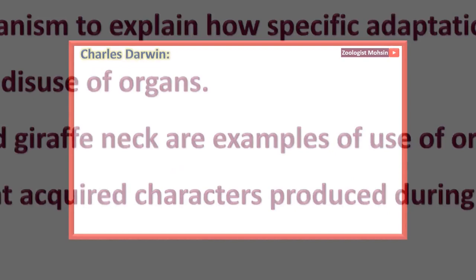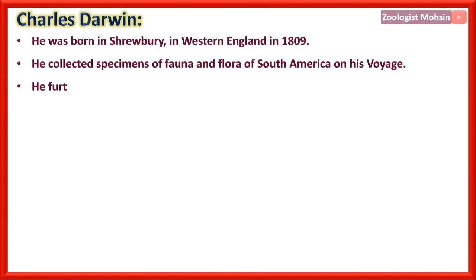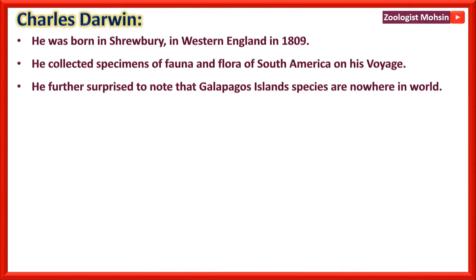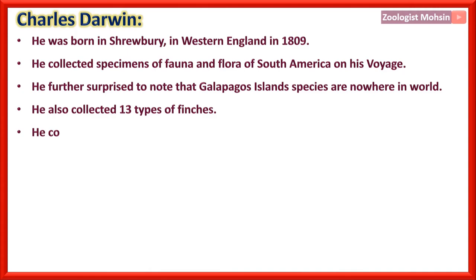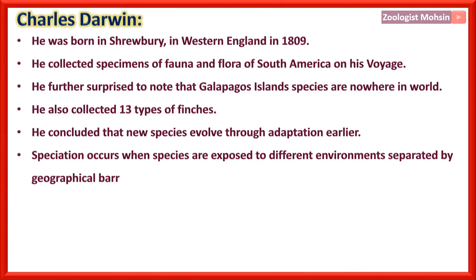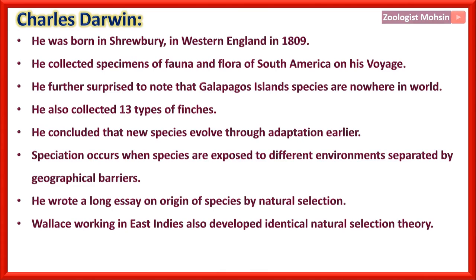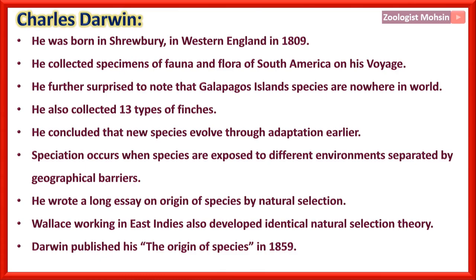Charles Darwin was born in Shrewsbury in western England in 1809. He collected specimens of fauna and flora of South America on his voyage and was surprised to find that Galapagos Islands species are found nowhere else in the world. He collected 13 types of finches and concluded that new species evolved through adaptation from ancestral species. Speciation occurs when species are exposed to different environments separated by geographical barriers. Wallace, working in the East Indies, also developed an identical natural selection theory. Darwin published The Origin of Species in 1859.